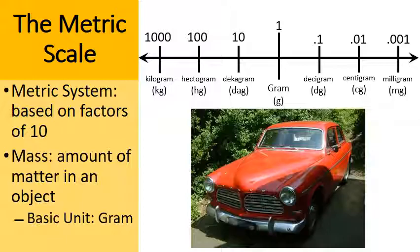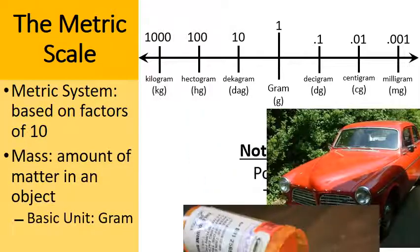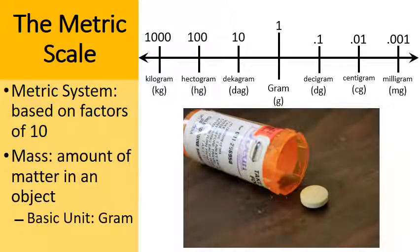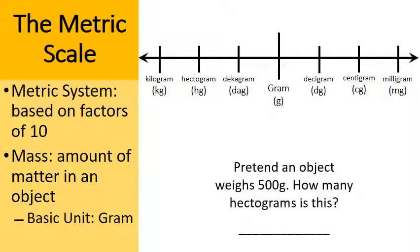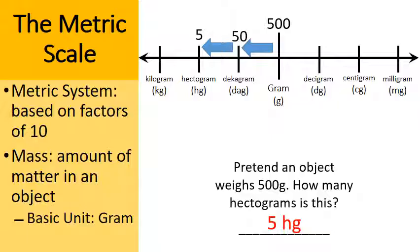What if we're trying to measure how heavy an automobile is? Automobiles are pretty heavy, so I'd probably choose kilograms. But if I'm taking a medicine pill, medicine pills are often measured in milligrams — it's not very big so I choose a smaller measuring unit. Practice problem: an object weighs 500 grams — how many hectograms is that? Moving the decimal one place left gives 50 decagrams, and another place left gives five hectograms. So 500 grams equals five hectograms.